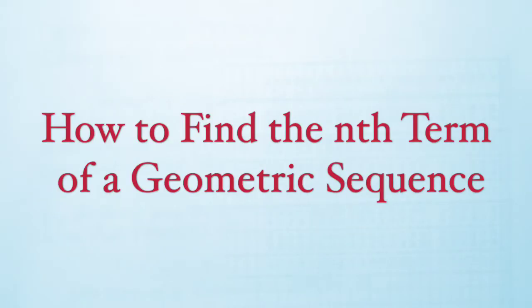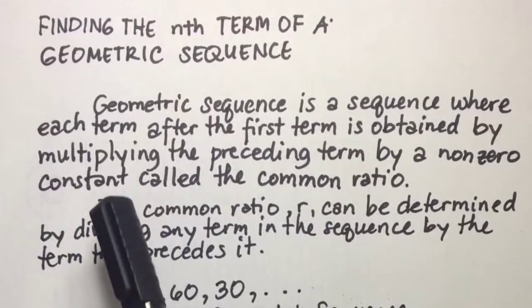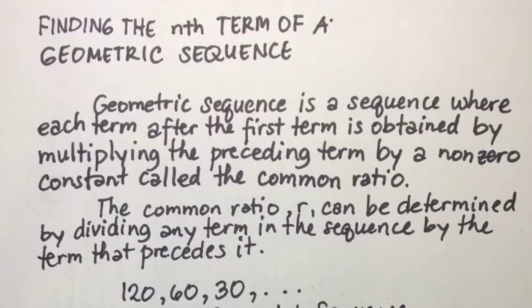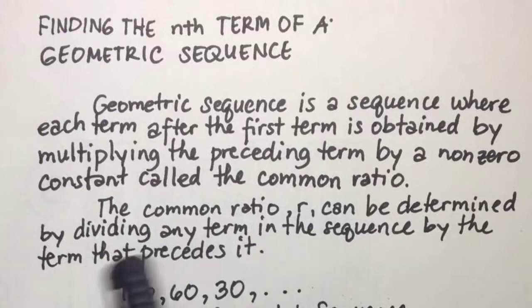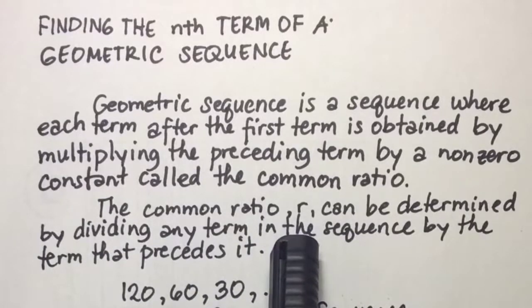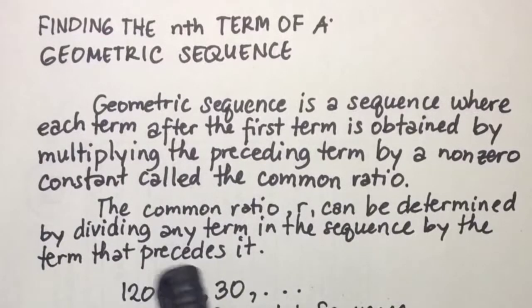For this video I'm going to discuss how to find the nth term of a geometric sequence. A geometric sequence is a sequence where each term after the first term is obtained by multiplying the preceding term by a non-zero constant called the common ratio, represented by R. This R can be determined by dividing any term in the sequence by the term that precedes it.